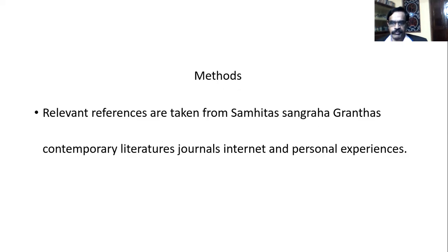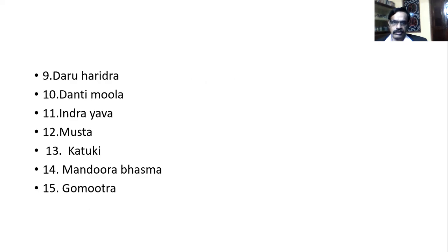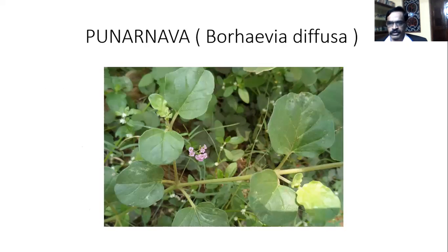The ingredients of Punarnavadi Mandura are: Punarnava, Trivrat, Shadushana, Vidanga, Devadaru, Kushta, Triphala, Haridra, Daru Haridra, Dantimula, Indrayava, Musta, Katuki, Mandura Bhasma, and Gomutra.